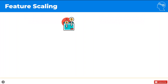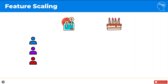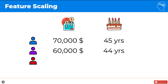Let's imagine we have a dataset where we have two columns: annual income of a person and their age. Just two simple columns. For simplicity's sake, we're only going to have three rows. We're going to have a blue person, a purple person, and a red person. The blue person makes $70,000 a year and their age is 45. The purple person makes $60,000 a year and their age is 44. The red person makes $52,000 a year and their age is 40.